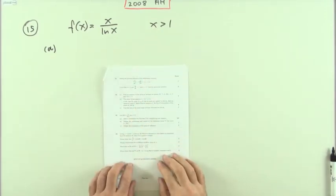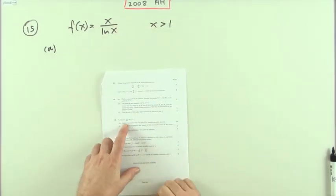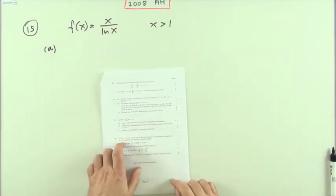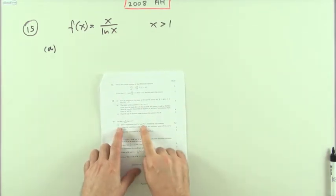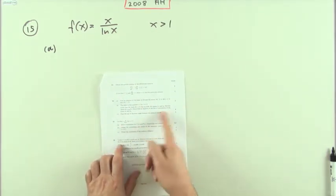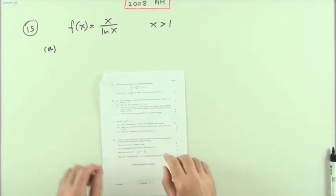Number 15 from the 2000 advanced higher. Here we've got this function involving logarithms in the denominator. Derive expressions for the first and second derivatives, and then we're going to use them to find stationary points and points of inflection.